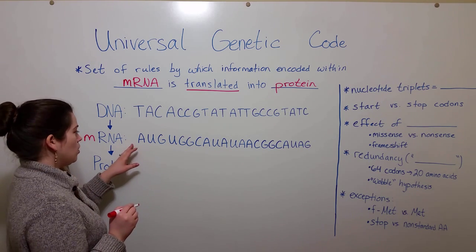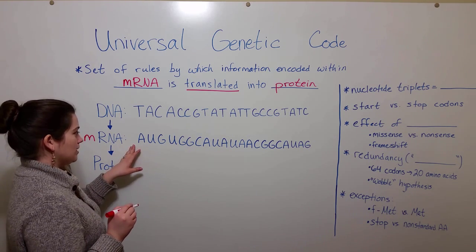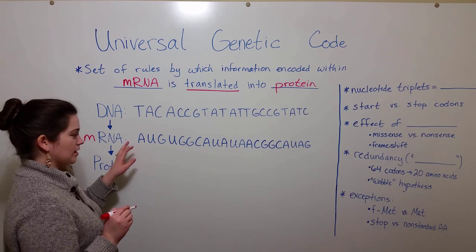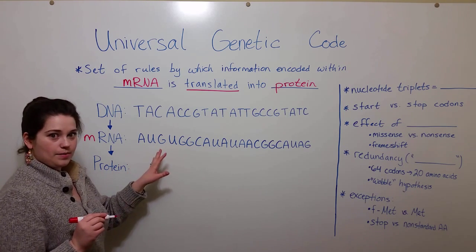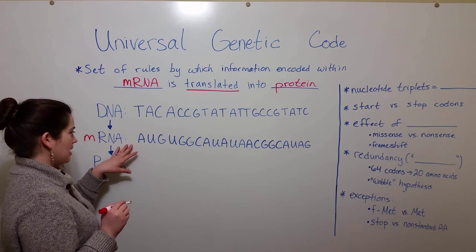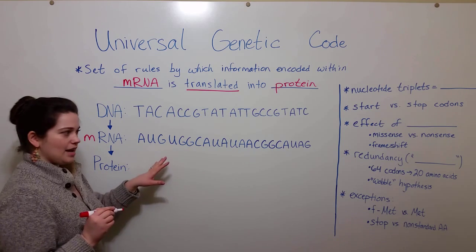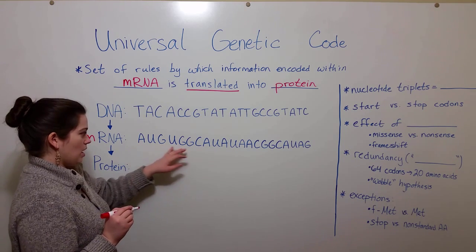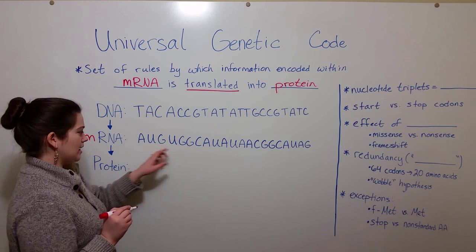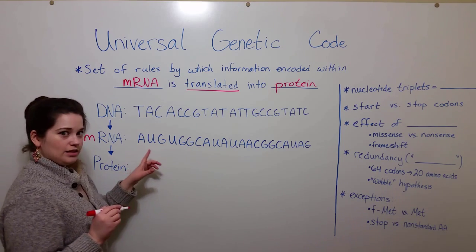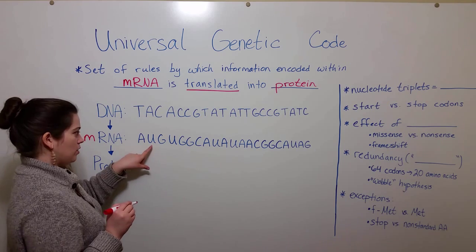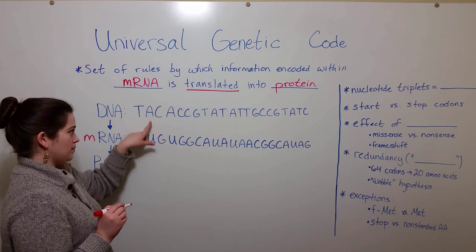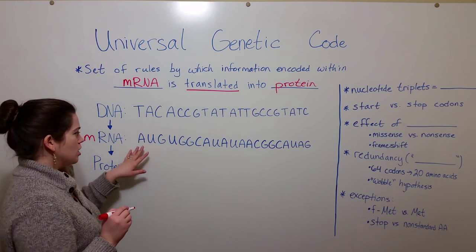Remember that in the process of transcription, because there is no thymine in RNA, the other nucleotides — adenine, guanine, and cytosine — are the same. But since there's no thymine, we use uracil to base pair with the adenines.